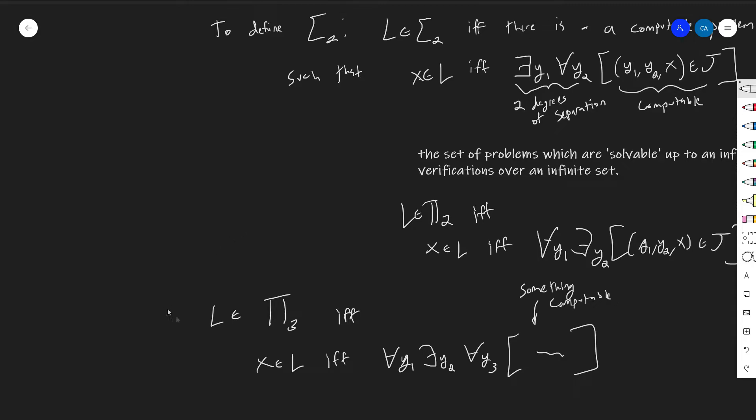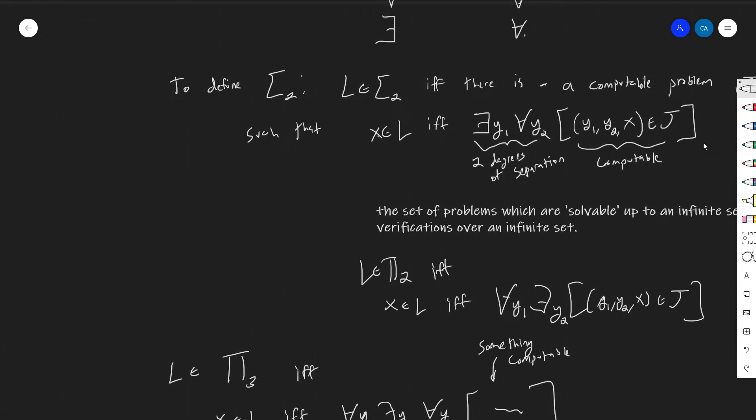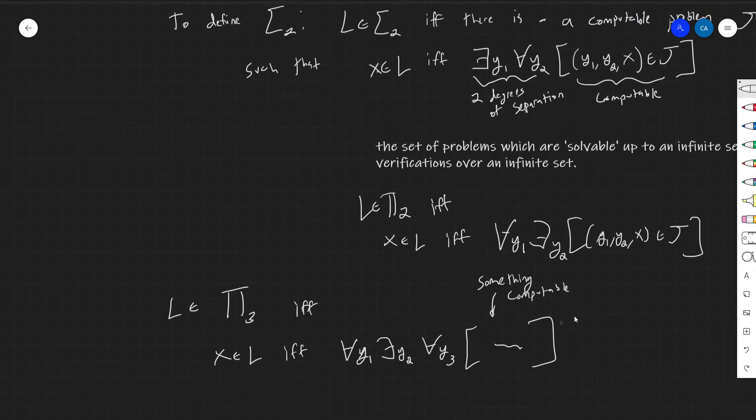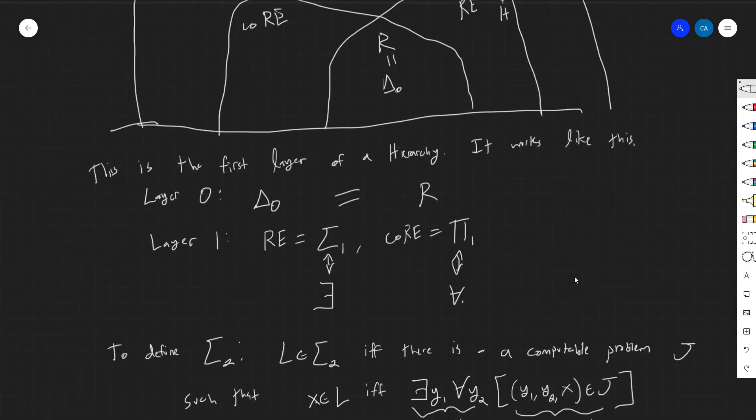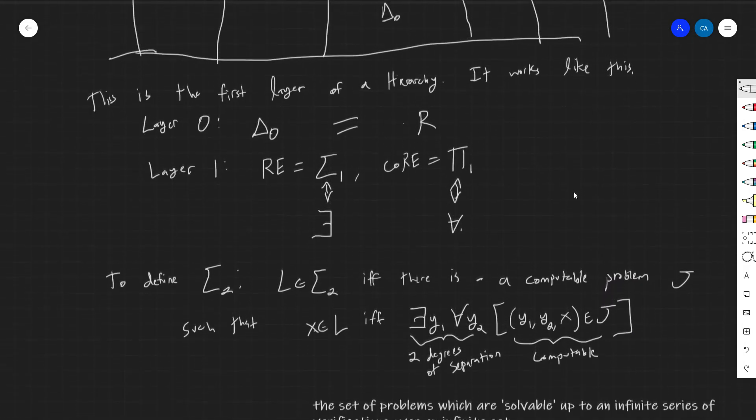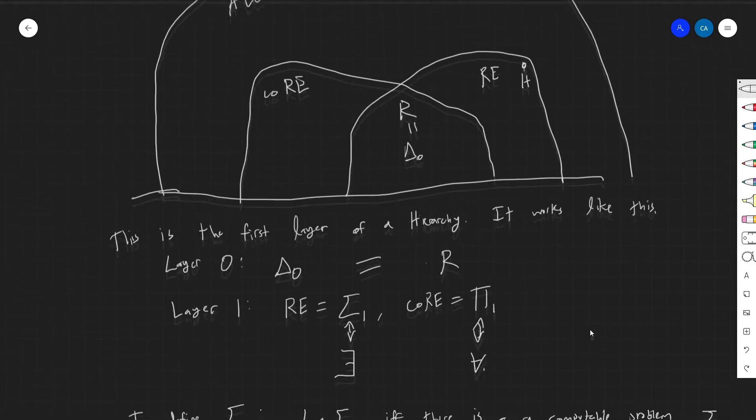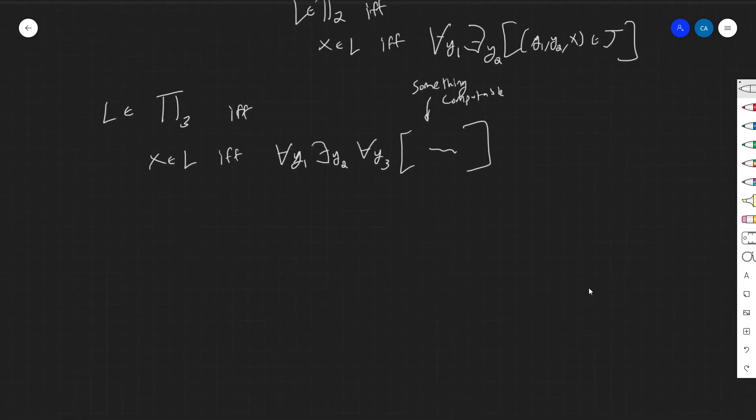What's going on here? Well, I need to do an infinite series of checks, and then for, but the checks that I'm doing, for every single one of these infinite checks, I have to do one of these tasks. So it's like three degrees of separation, and you see what's going on here, you see the hierarchy. So this defines, and this defines the arithmetic hierarchy.